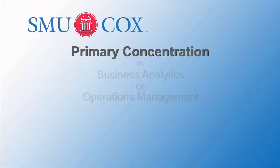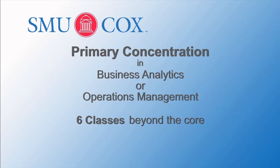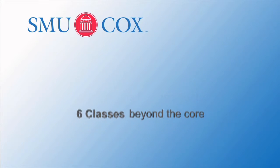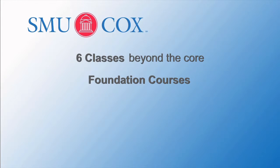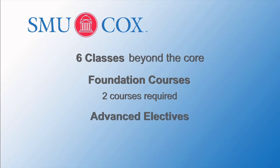At a high level, the requirements of the concentration are that you take six elective courses in the concentration area beyond your core curriculum. These courses have to be taken from two categories. The first is foundation courses, and you have to take at least two courses from the foundation set. In addition, we have a set of advanced electives from which you would select your remaining elective courses. In order to get a minor in information and operations management, you need to take four elective courses beyond your core curriculum, and again, at least two of these courses have to be from the foundation set.